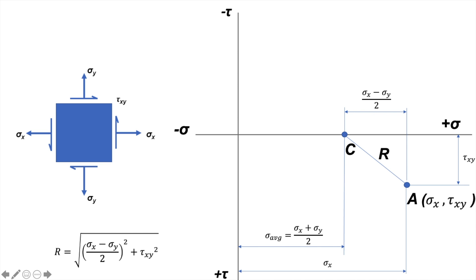The radius of the circle is simply using the Pythagoras theorem where we calculate R by the square root of sigma x minus sigma y over 2 the whole square plus tau xy square.